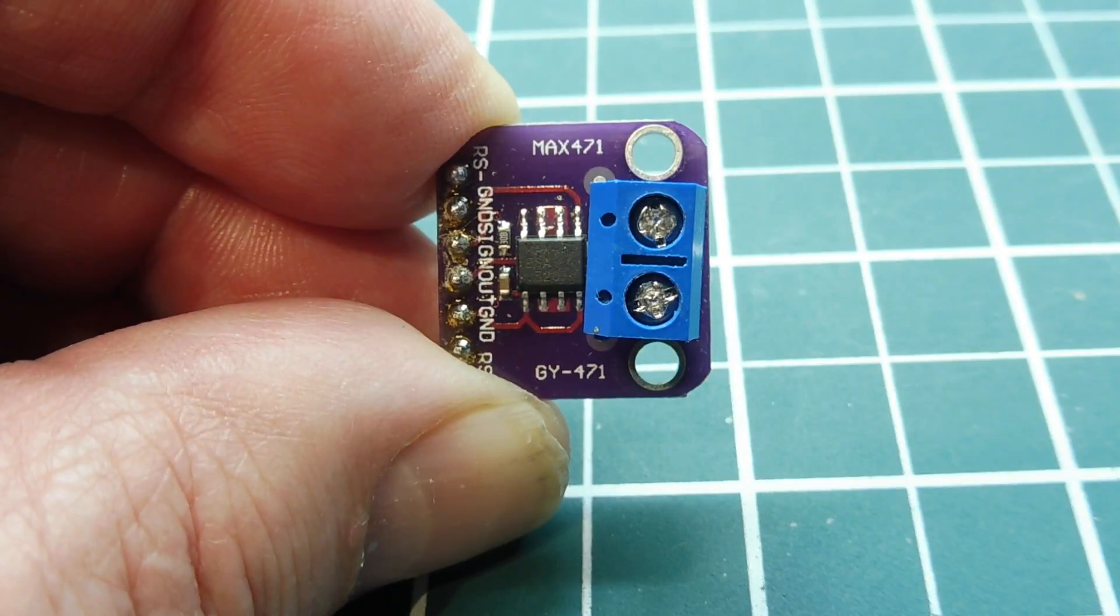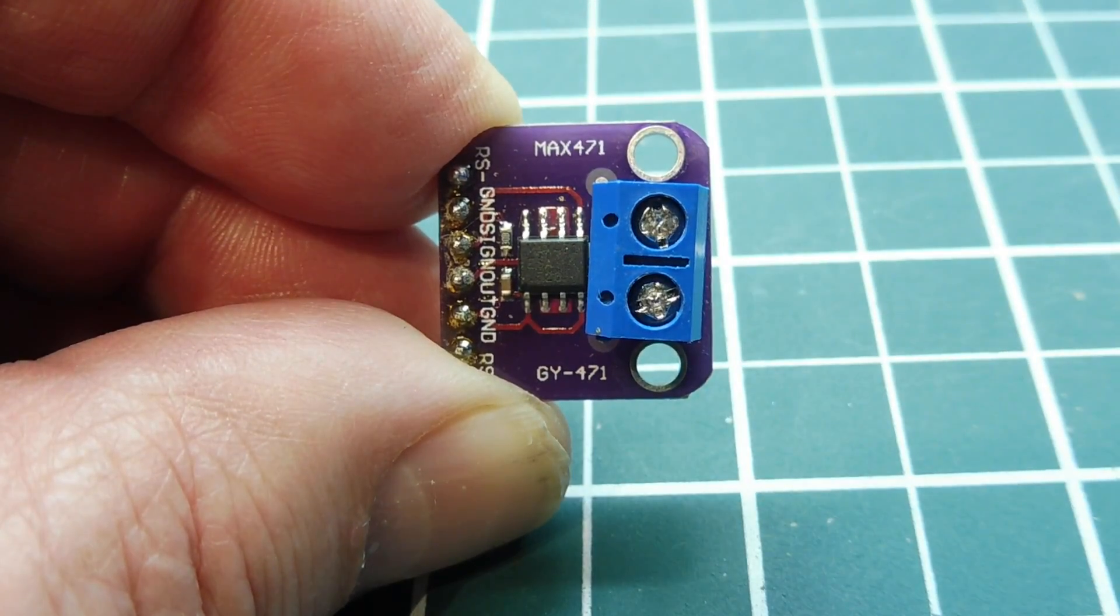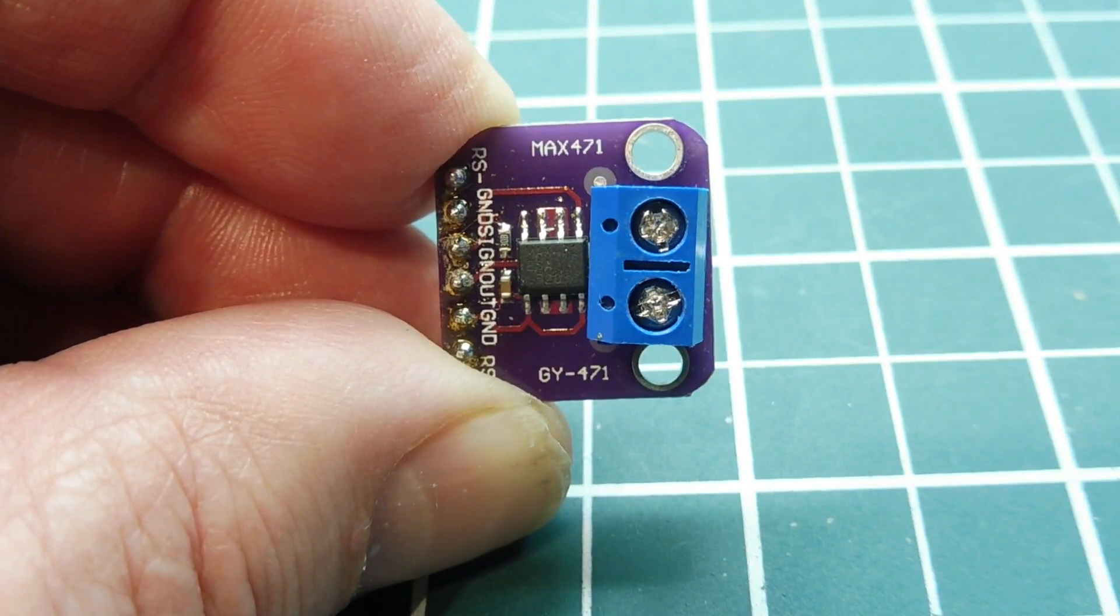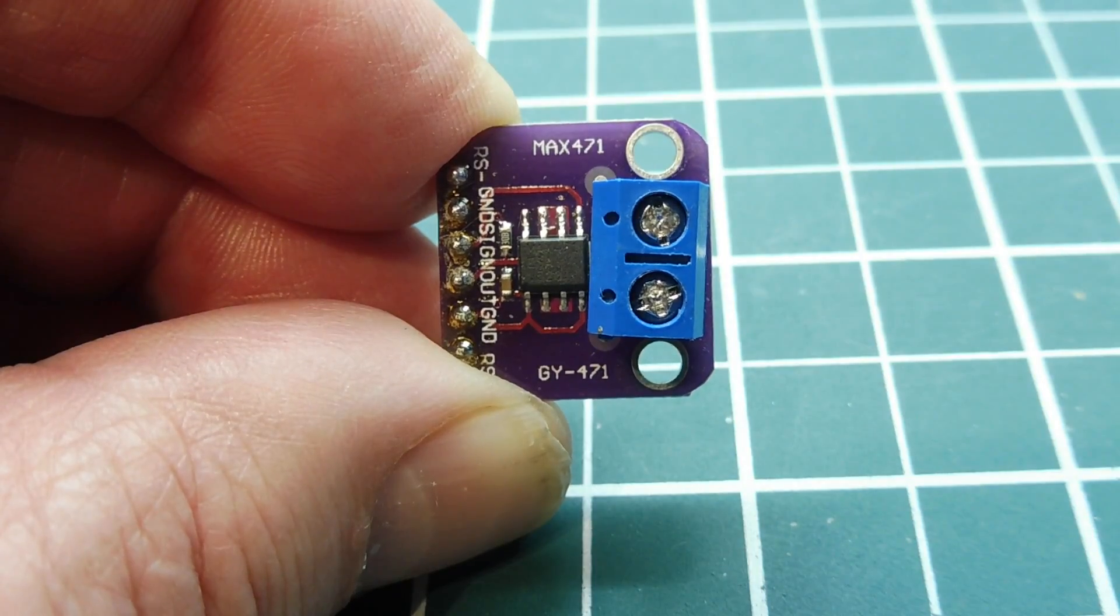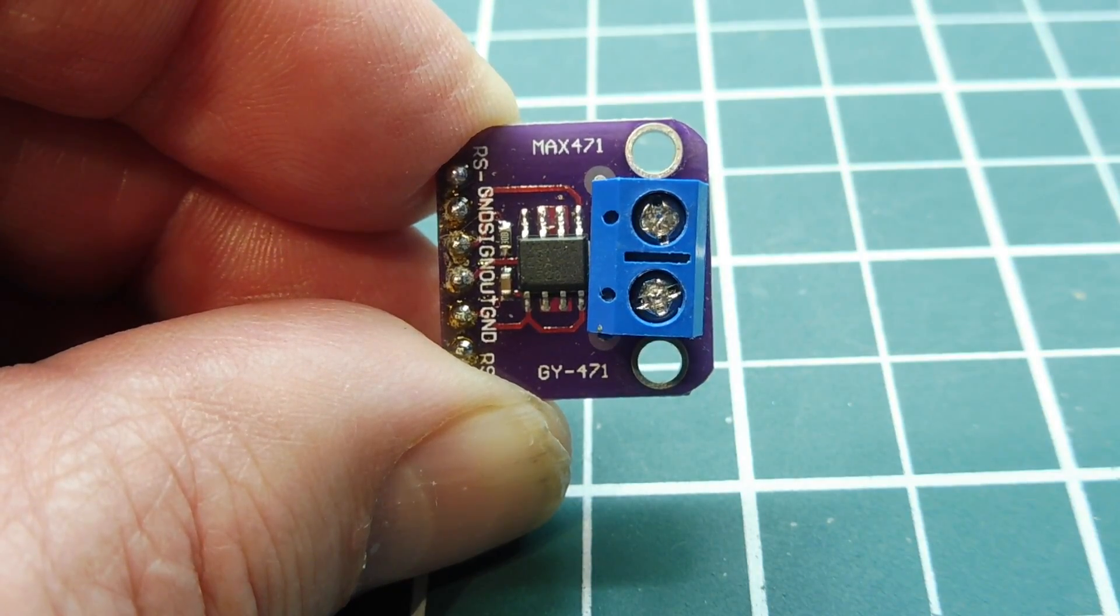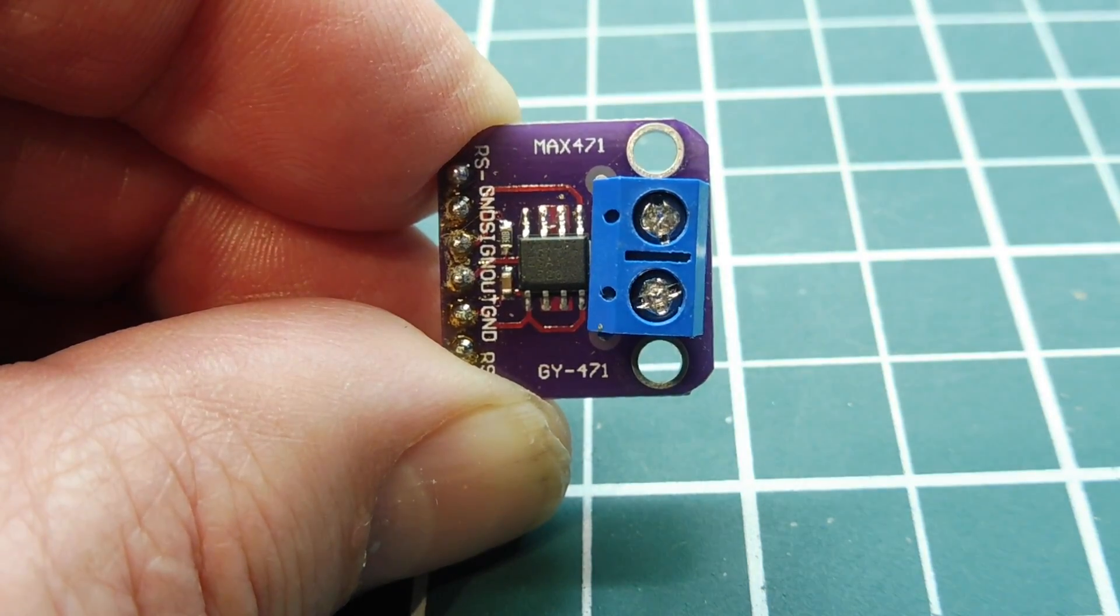Okay, in this video we're going to look at DC current sensing and measurement. We're going to be using this little breakout board here, using the MAX471 IC. Now this IC can take an input voltage of 3 to 36 volts and can measure up to plus or minus 3 amps.